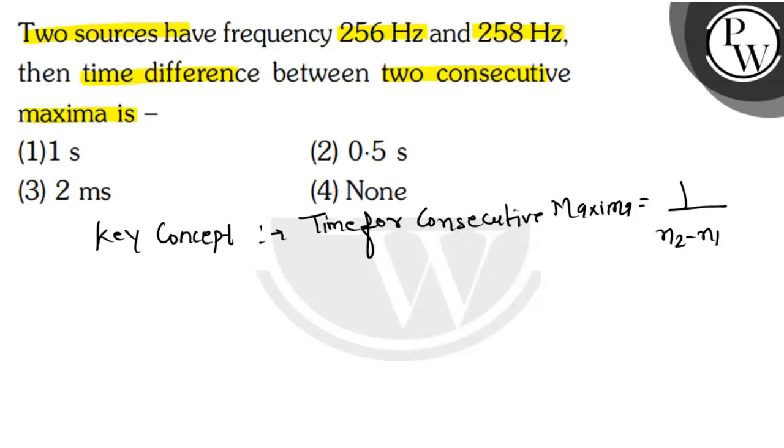Let's solve the formula. T equals 1 upon n2 minus n1, so 1 upon 258 minus 256, which equals 1 by 2, which equals 0.5. So our time difference will be 0.5 seconds.